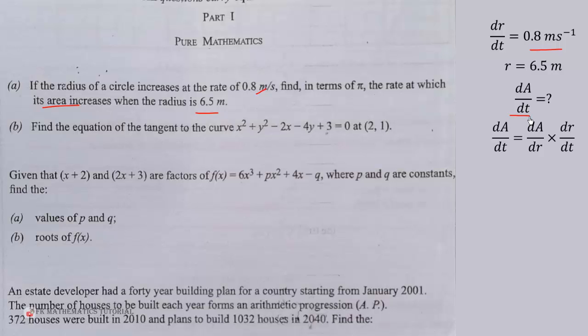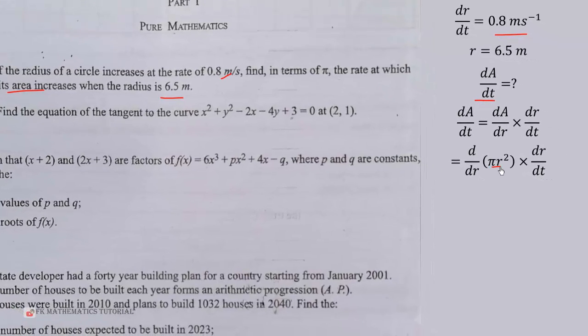So we can do the substitution. We know that the area of a circle is pi r squared. So we differentiate this with respect to r to get dA/dr. That will give us 2 pi r times dr/dt. We know dr/dt to be 0.8, the radius is 6.5, so we substitute and when we simplify we get 10.4 pi meters squared per second.